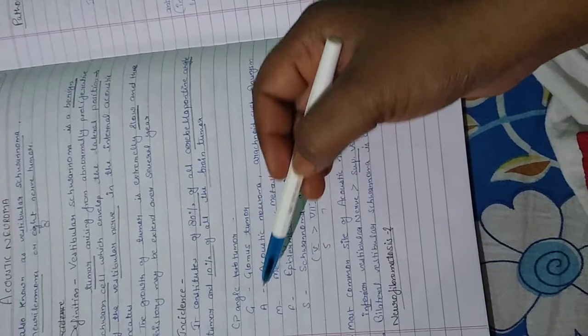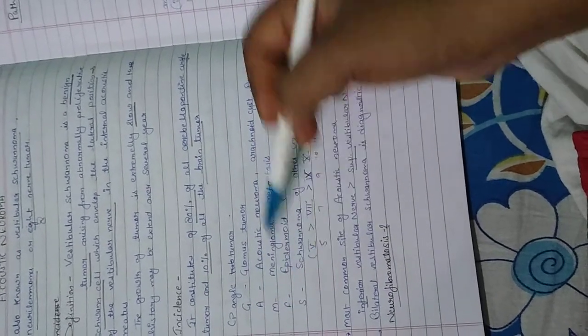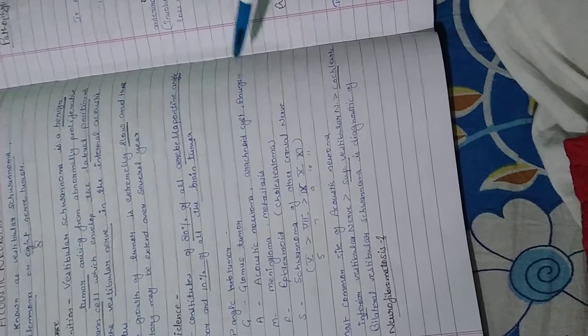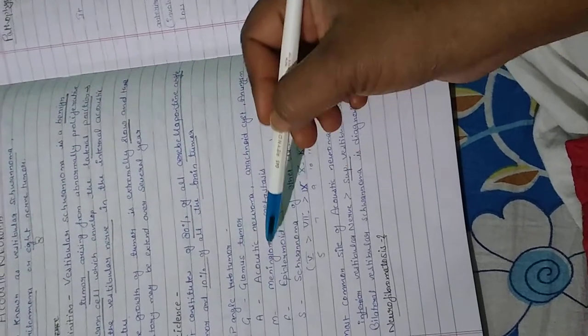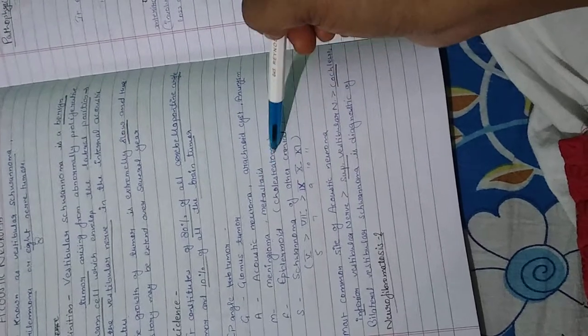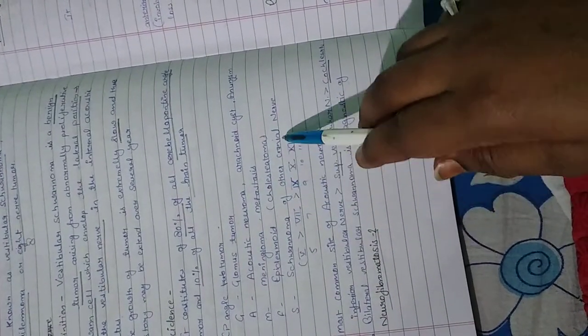Differential diagnosis for Cerebral Pontine Angle tumors using GAMES mnemonic: G - Gliomas tumor, A - Acoustic Neuroma, M - Metastasis, E - Epidermoid Cholesteatoma, S - Schwannoma of other cranial nerves. Arachnoid cyst and aneurysm are also included.